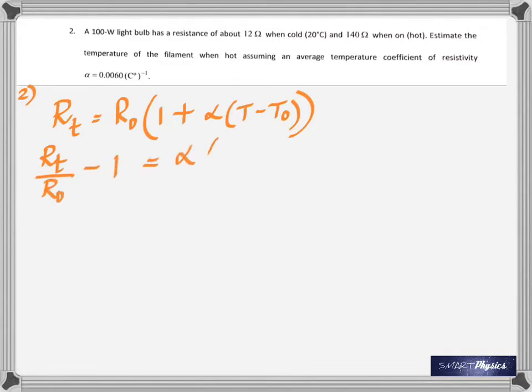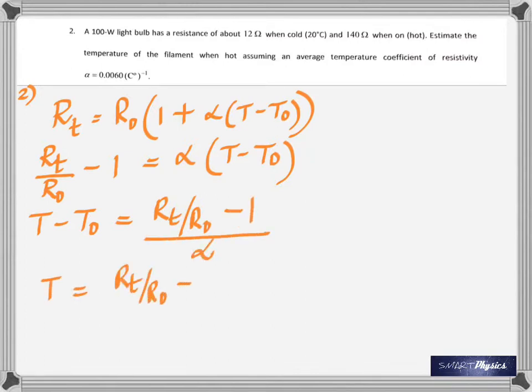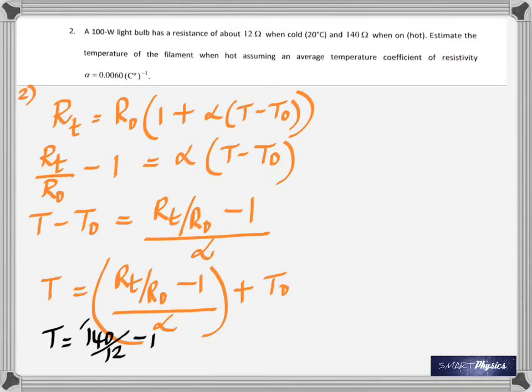R naught is the resistance at 20. First what I'm doing is I'm rearranging it in such a way that I make T minus T naught the subject. Now to find T, take T naught to the other side, which means you add T naught to that, and then substitute the values given. You would get 1797.8 degrees Celsius.